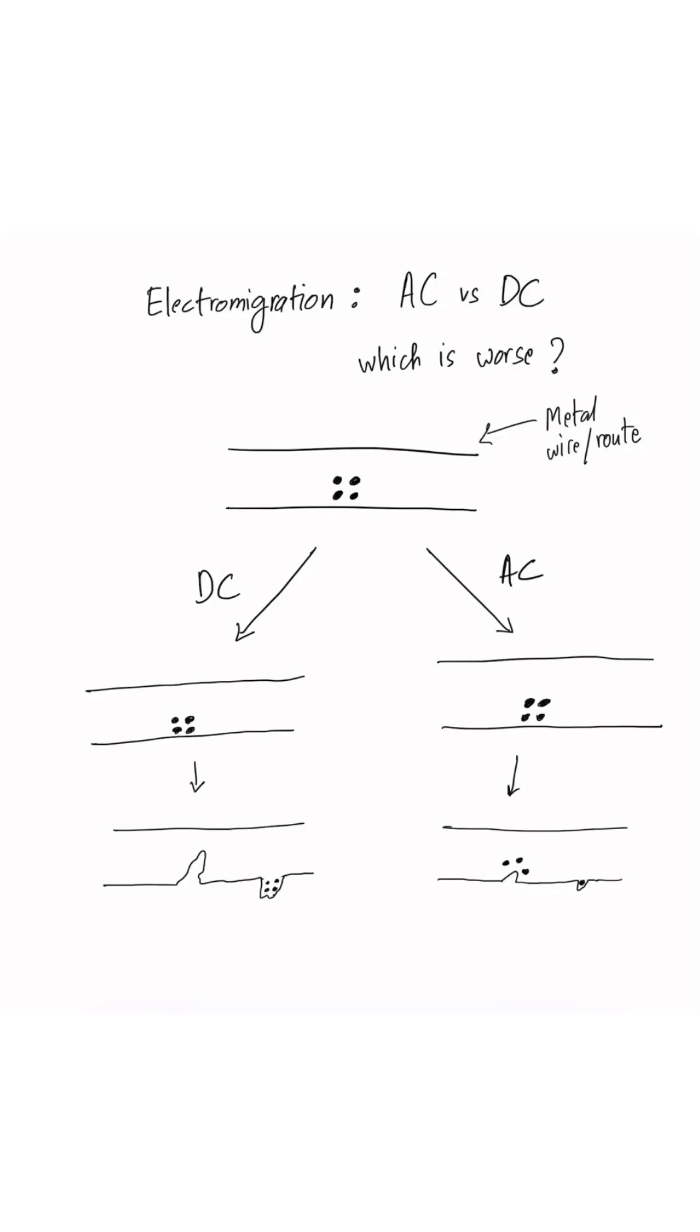This question was asked in an interview at one of the top semiconductor companies very recently. The question is: will the EM effect be worse when AC or alternating current is flowing through the wire versus when direct current is flowing through the wire?